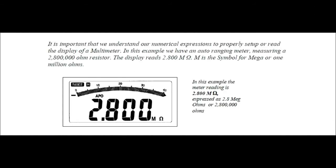It is very important that we understand our numerical expressions to properly set up or read the display of a multimeter. In this example, we have an auto-ranging meter measuring a 2,800,000-ohm resistor. The display reads 2.800 megaohms. The capital M is the symbol for mega, or 1 million ohms.